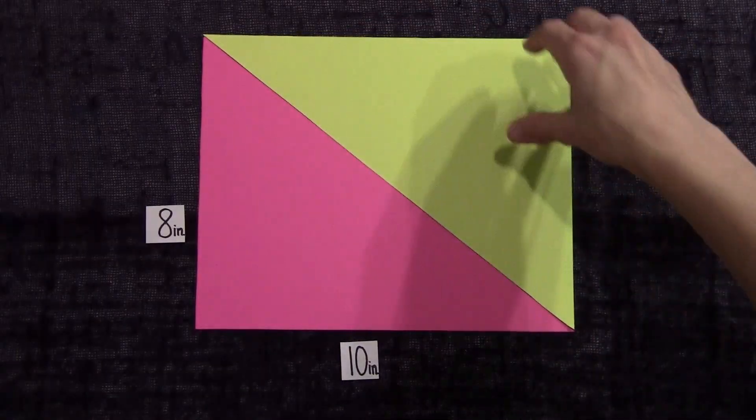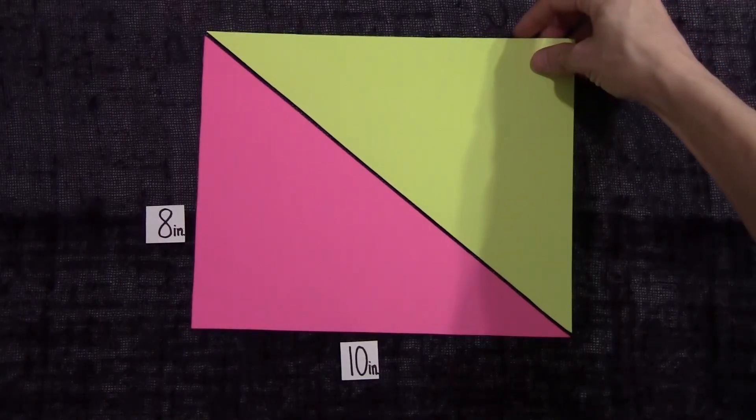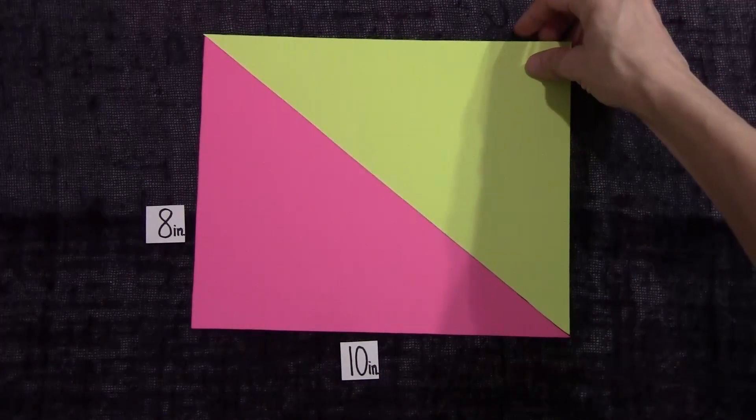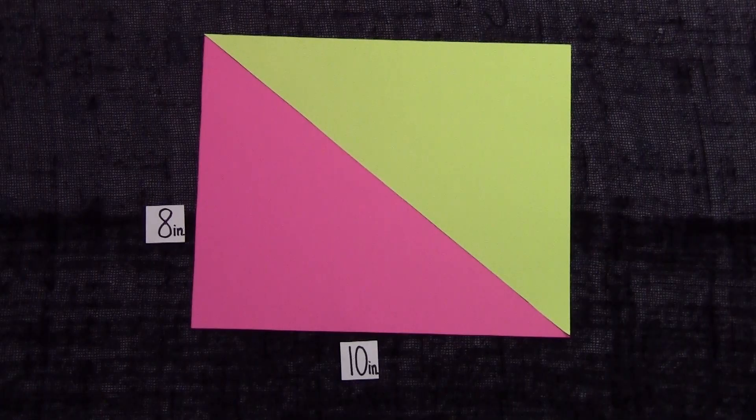Now, if I line these up with their hypotenuses completely touching, you see I now have a rectangle with a length of 10 inches and a width of 8 inches.